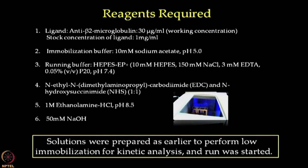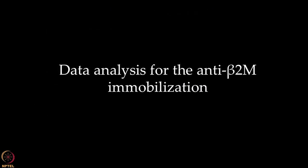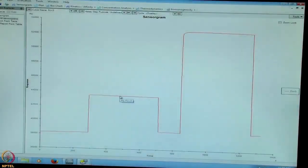We prepared the above mentioned solutions, transferred them to appropriate sample vials, placed them in the suitable rack, and started the immobilization run as we did in lecture 33. To save time, we shall now proceed directly to analyze the data obtained from immobilization of beta-2 microglobulin antibody. So this is a blank sensorgram.